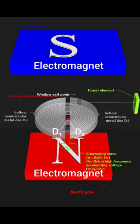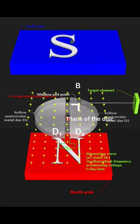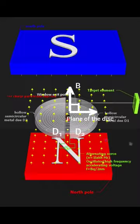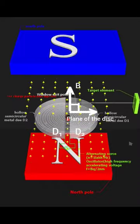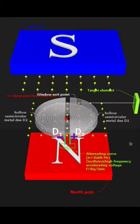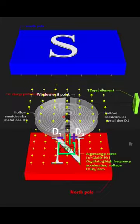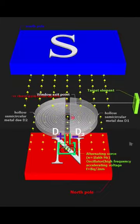A strong electromagnet covers the ds, and the magnetic field thus produced acts at right angles to the ds planes. To complete the construction, a high-frequency alternating voltage or oscillator connects the ds, d1 and d2.